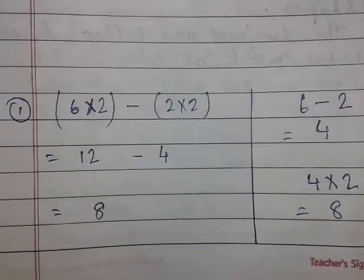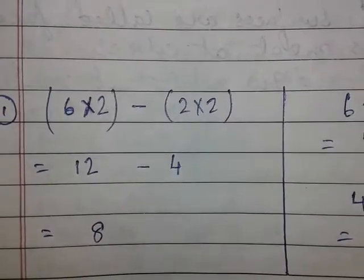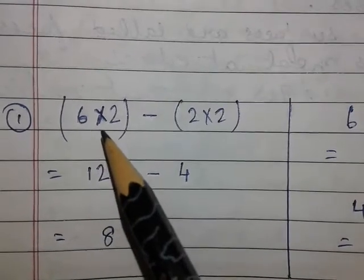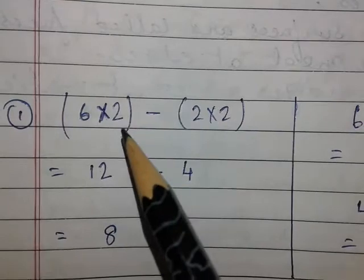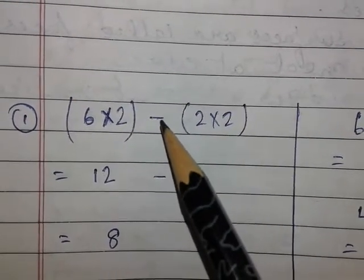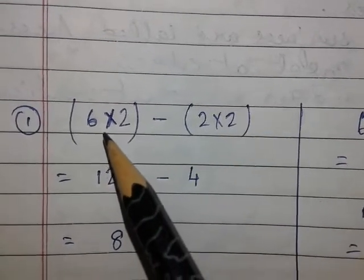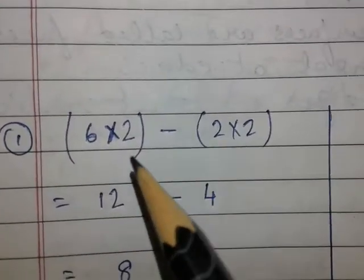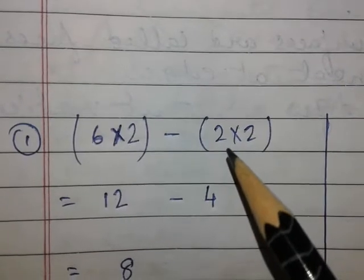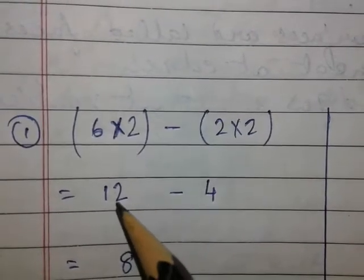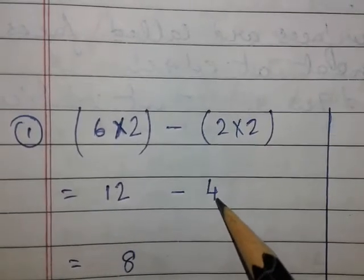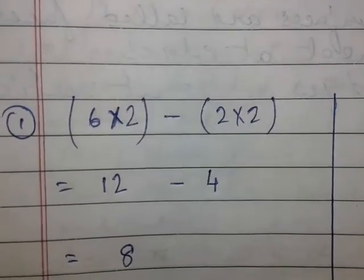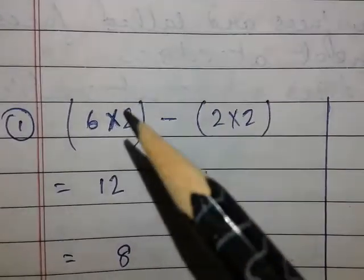From here we will do these two pages and I will send you the answers the next day. Now look here, children — I have taken an example to explain something very interesting. I have taken two multiplication facts: six into two and two into two, with a minus sign between them. This means we have to find out the difference between six times two and two times two. Six into two is twelve and two into two is four, so twelve minus four will be eight.